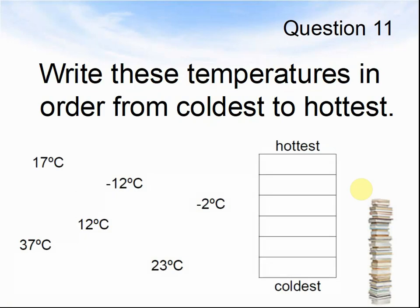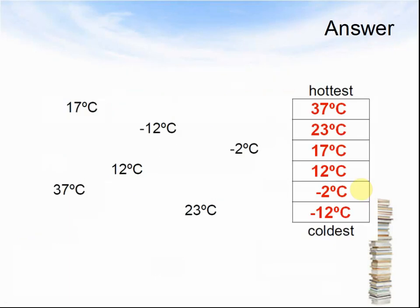What's next? Question 11. Write these temperatures in order from the coldest to hottest. Pause the video until you have filled out the chart. Here is the answer. The coldest was minus 12 degrees centigrade. Then it went minus 2 degrees centigrade. Then 12 degrees centigrade, 17 degrees centigrade, 23 degrees centigrade, and the hottest was 37 degrees centigrade.